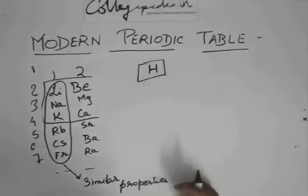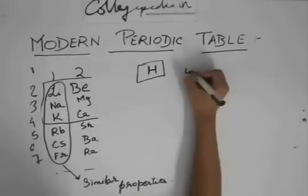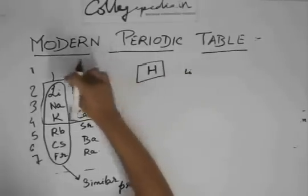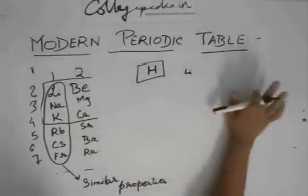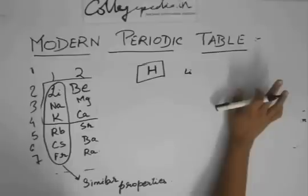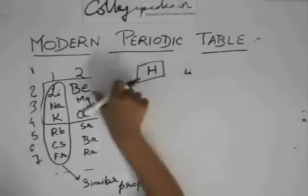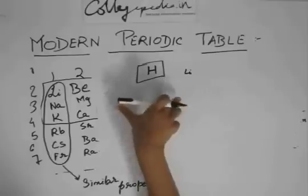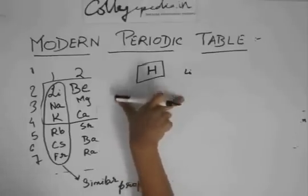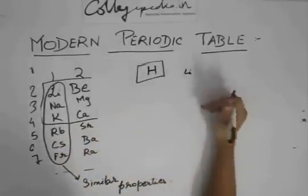They have similar properties because after lithium, there are 17 more groups, but are all these groups filled? No. There is a gap of 10 in between. So there are seven more elements after lithium.